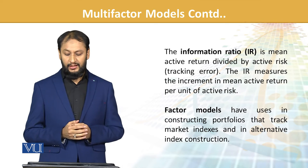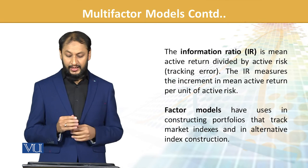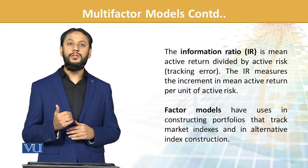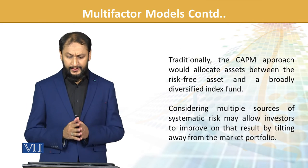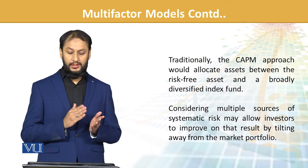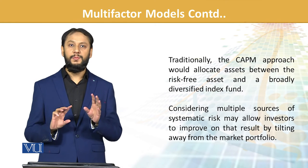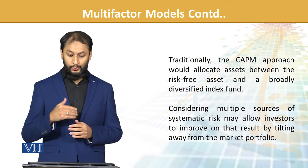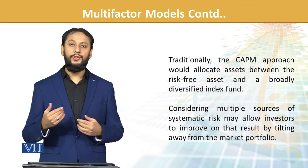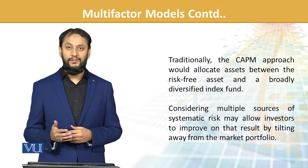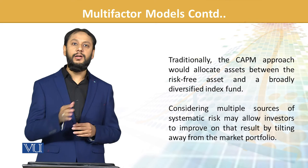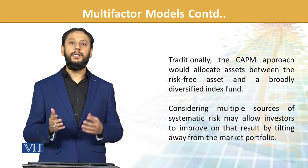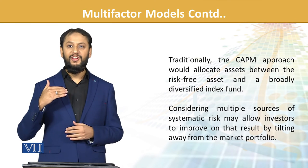Factor models have uses in constructing portfolios that track market indexes and in alternative index construction — index construction aur index tracking dono mein inका bada role hai. Traditionally, the CAPM approach would allocate assets between a risk-free asset and a broadly diversified index — CAPM mein do parts mein split kar leta hai: RF aur market. Considering multiple sources of systematic risk may allow us to improve on that result by tilting away from the market portfolio. Multi-factor model humein allow kar deta hai ke hum market se thoda tilt le sakein — CAPM ki requirement se zyada flex milti hai.